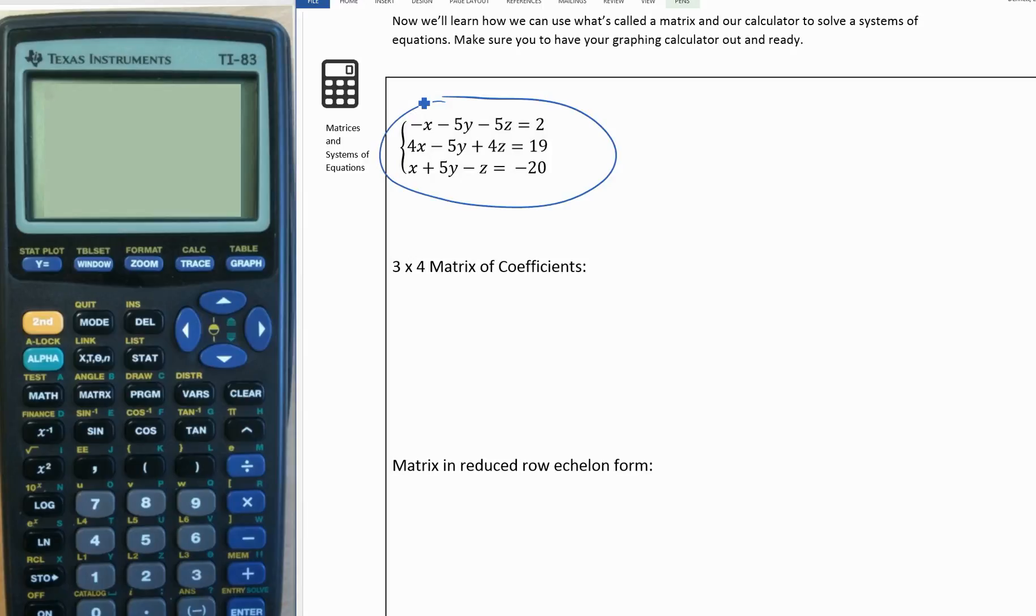Now we're going to make a matrix. For a matrix, we use these square brackets, and each space is going to be a coefficient, the number in front of one of our variables. Across the top, we'll look at the first equation and write down the coefficients: negative 1, negative 5,